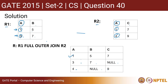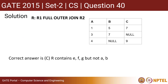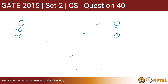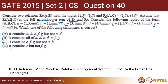Now if we check our options A, B, C, D, E, F, G — we can find that we are getting E, F, G here but not A and B. So that is basically option C: R contains E, F, G but not A, B. This is the correct answer.